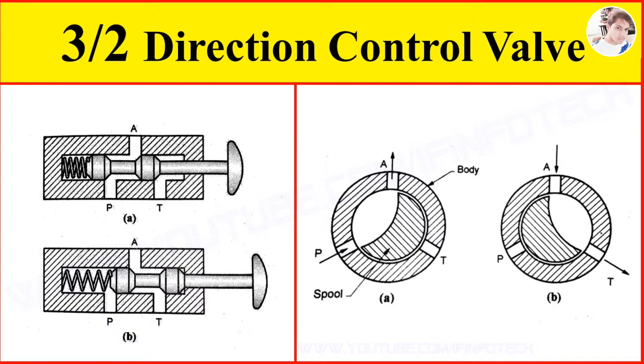The working of 3x2 direction control valve. First is the 3x2 sliding spooled valve. In the figure, it is a palm operated type of valve.